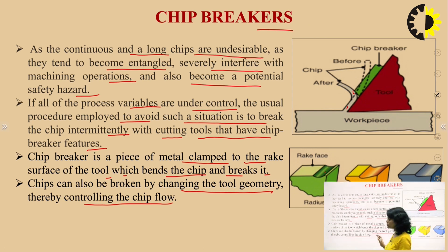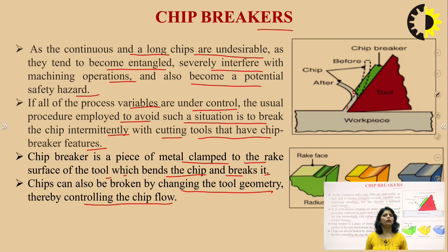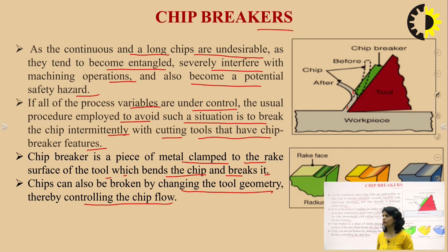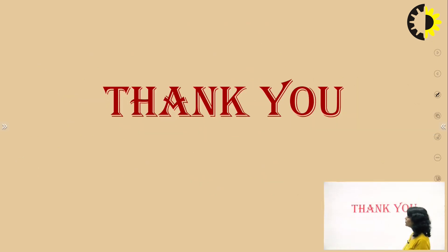This is all for today's lecture. We discussed the mechanism of chip formation — how material deforms first elastically then plastically along the primary, secondary, and tertiary deformation zones. We discussed the different types of chips formed in cutting operations and the factors on which chip type depends. Finally, we discussed chip breakers. Thank you.